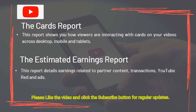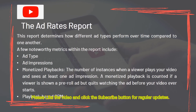The Cards Report shows how viewers are interacting with cards on your videos across desktop, mobile, and tablets. The Estimated Earnings Report details earnings related to partner content, transactions, YouTube Red, and ads. The Ad Rates Report determines how different ad types perform over time compared to one another — noteworthy metrics include ad type, ad impressions, and monetized playbacks: the number of instances when a viewer plays your video and sees at least one ad impression. A monetized playback is counted if a viewer is shown a pre-roll ad but quits watching the ad before your video ever starts.